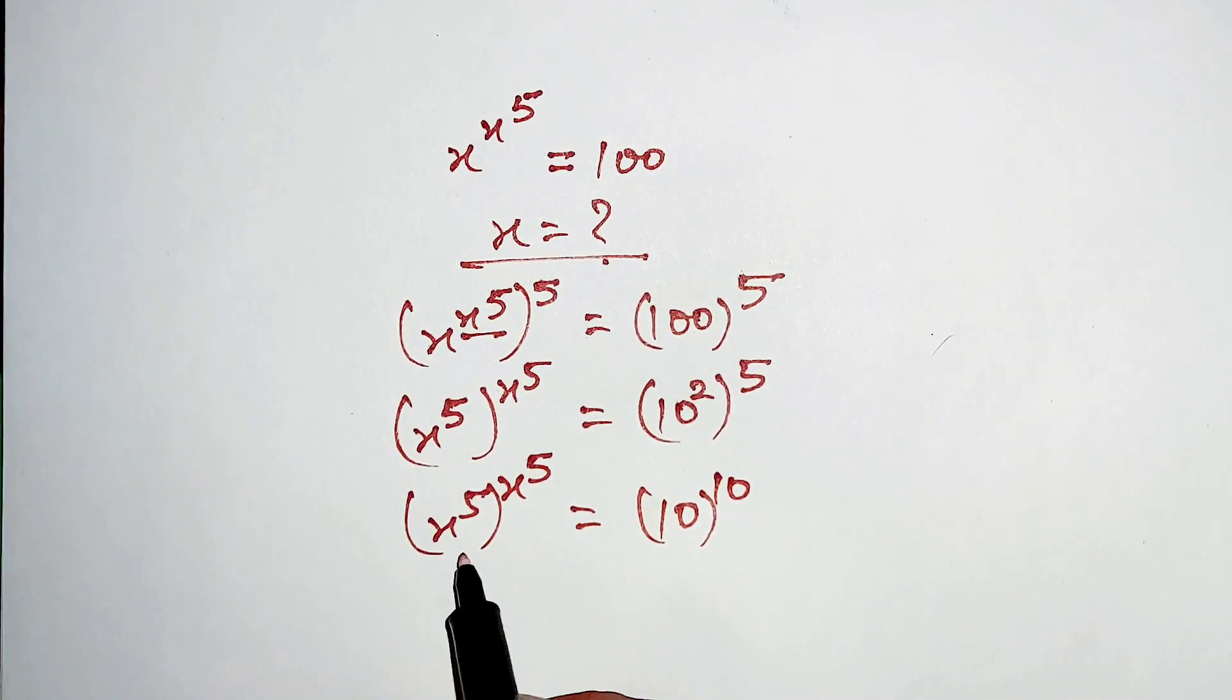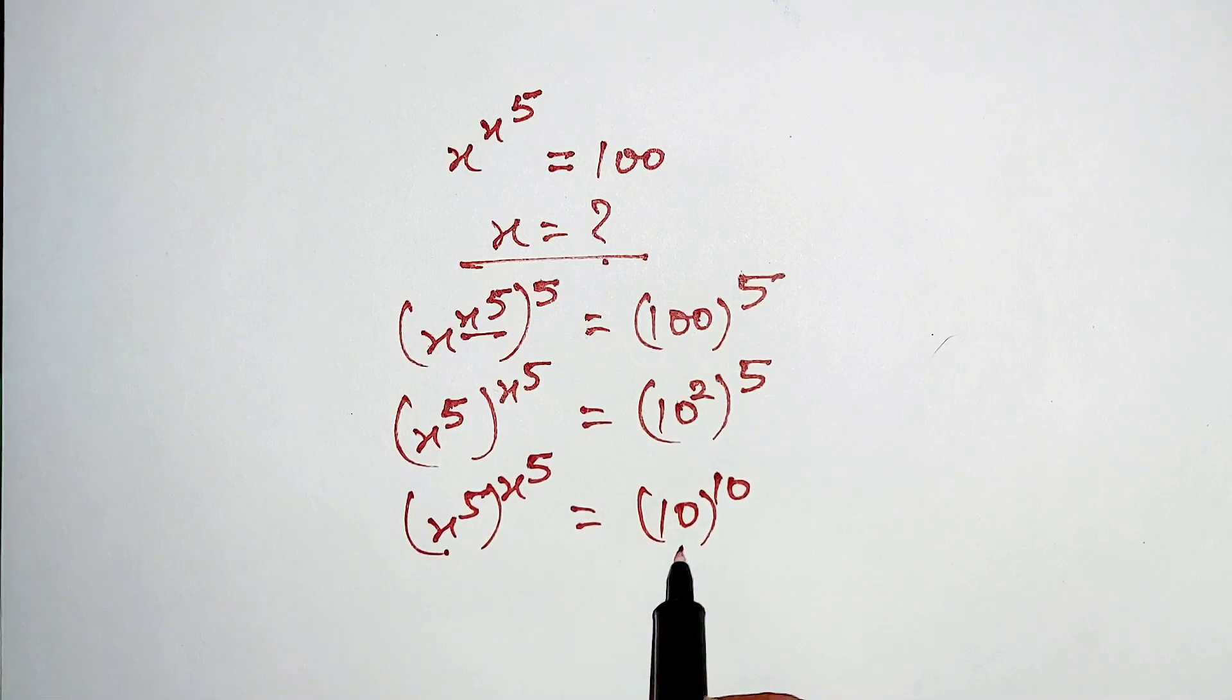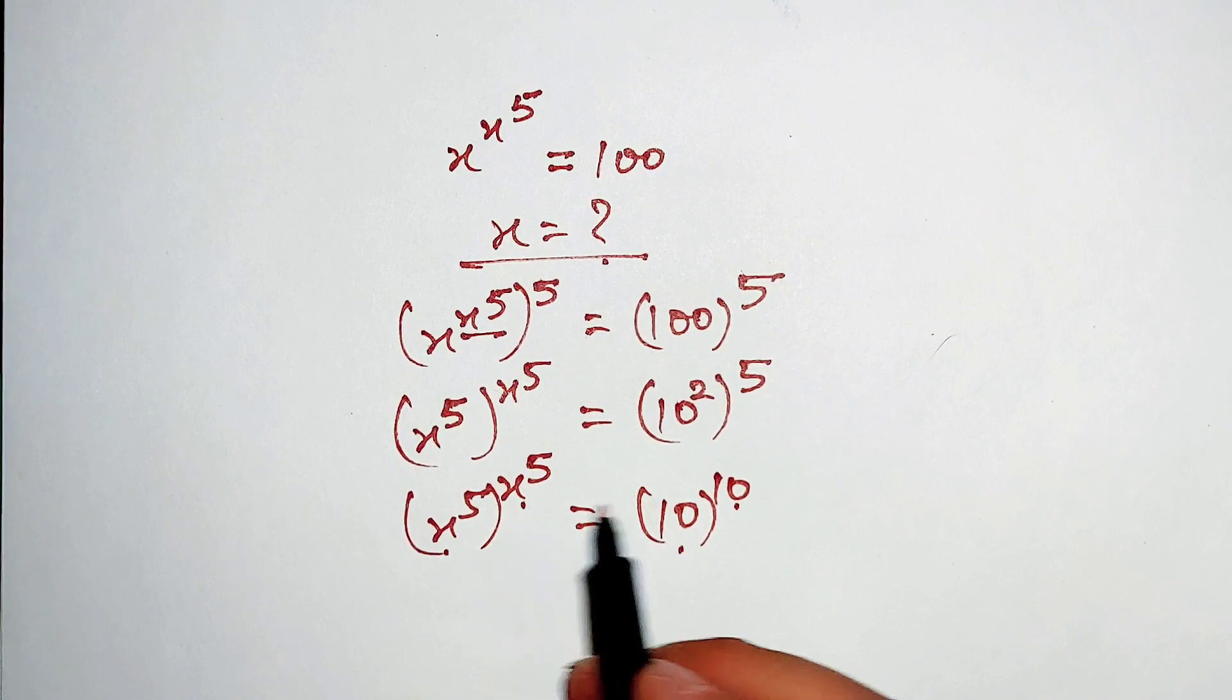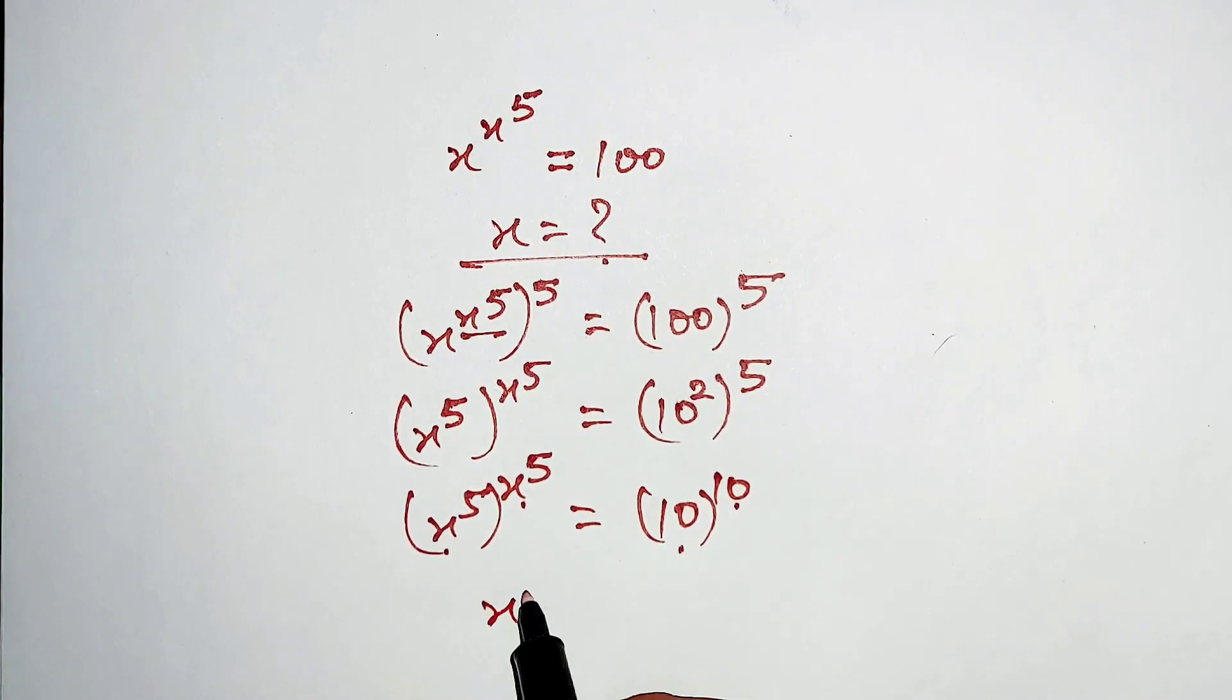Now both sides have the same base and power, so we can equate the exponents on both sides. Here x^5 equals 10.